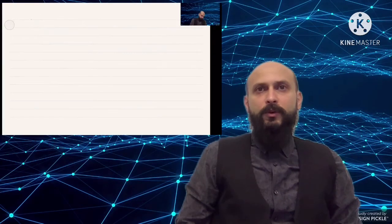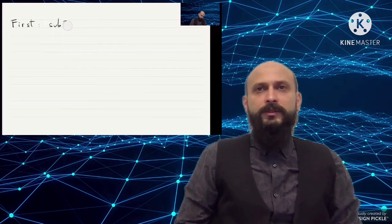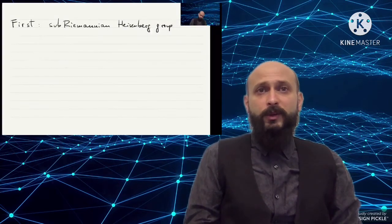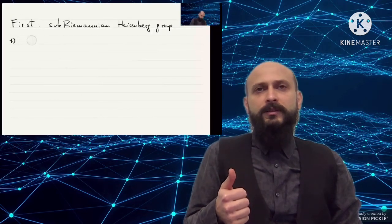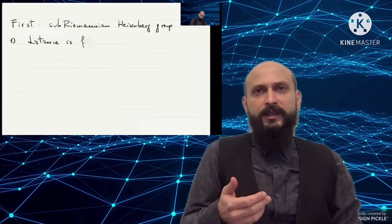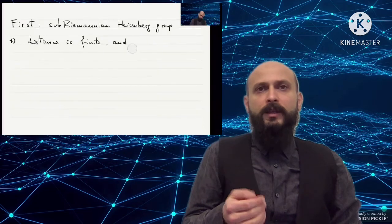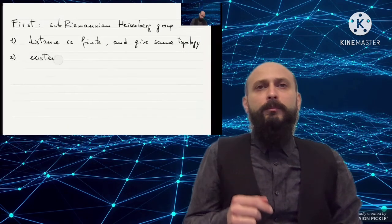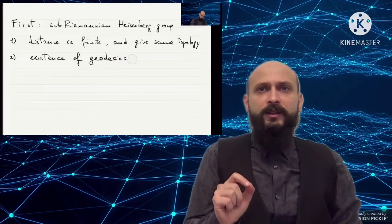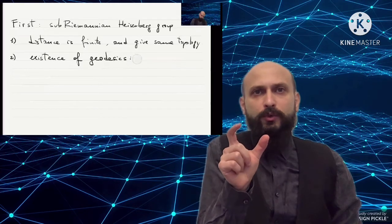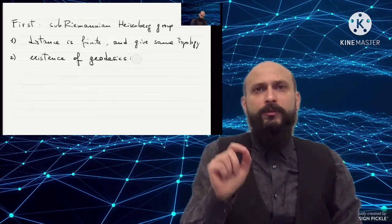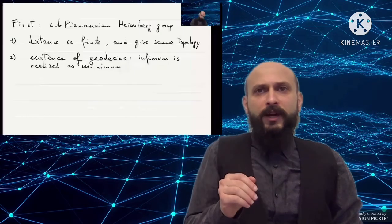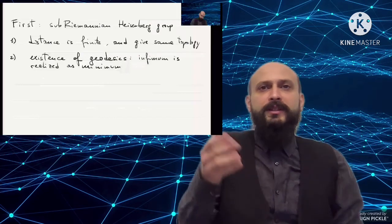In the first part of this course, we will focus on the plane distribution of the three-dimensional Heisenberg group. We will consider the Heisenberg distance, and we will discuss the following facts. First, such a distance turns the three-dimensional space into a metric space with the same standard topology, namely nearby points can be connected with short admissible curves. Second, between every two points there is in fact a geodesic curve, namely the distance between each two points equals the length of some curve between them — in other words, the infimum is realized as a minimum. Up to a multiplicative factor, we can think of the length of such a curve as the Euclidean length of the ambient space, provided the curve is admissible.